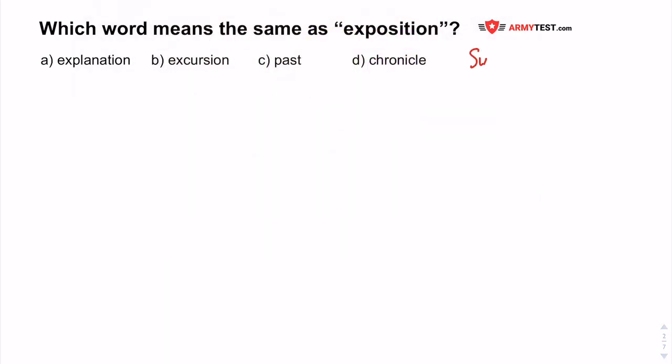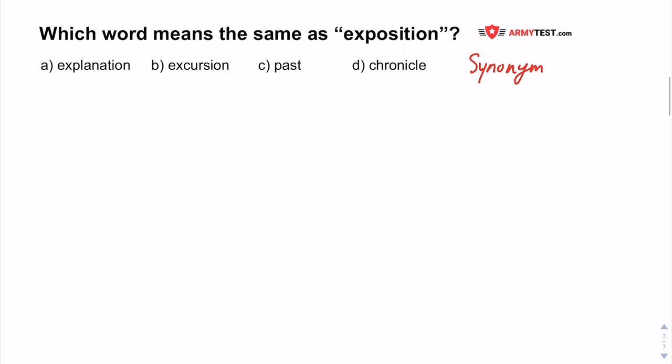The first one says: which word means the same as exposition? A. Explanation, B. Excursion, C. Past, or D. Chronicle. This is clearly looking for a synonym. What you want to do is start this kind of question by doing your best to define the word they give you. In this case, exposition means to expose, publish, or explain.